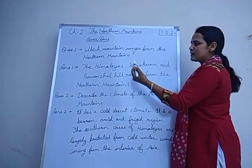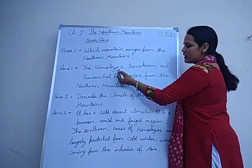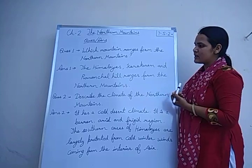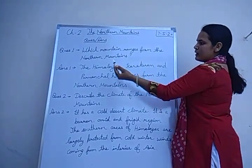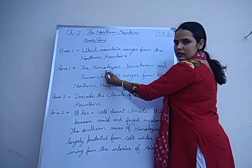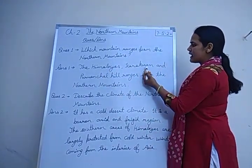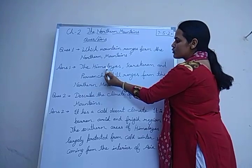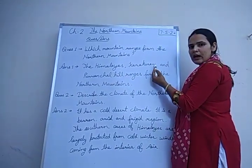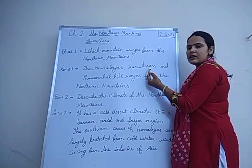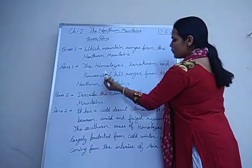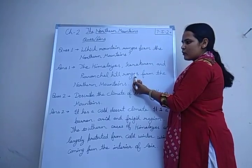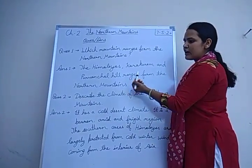The Himalaya ranges are divided into three parallel ranges: the greater Himalaya (Himadri), the middle Himalaya (Himachal), and the outer Himalaya (Shivalik). Mount Everest is the highest peak of the Himalayas. The Karakoram range is in the northwest of the Himalayas, and K2 and Mount Godwin-Austen is the second highest peak in this range. The Purwanchal hill ranges are covered with thick forest and a rich variety of wildlife.